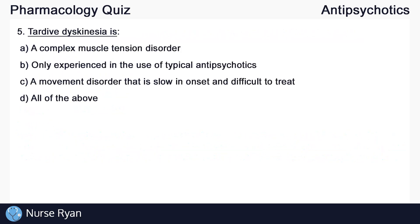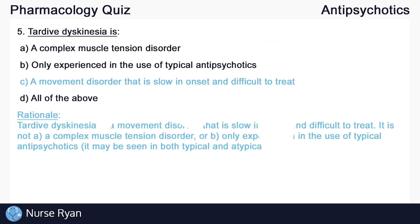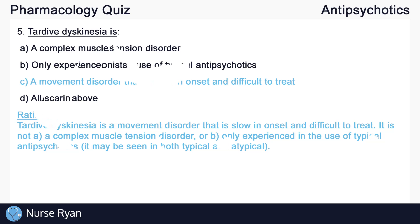Question number five: tardive dyskinesia is... The answer here is C, a movement disorder that is slow in onset and difficult to treat. This is a correct description of tardive dyskinesia. It is not A, a complex muscle tension disorder, or B, only experienced in the use of typical antipsychotics. It may be seen in both typical and atypical.